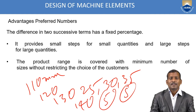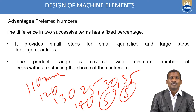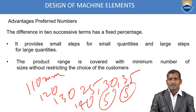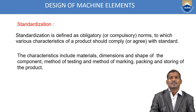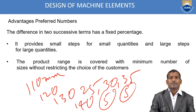Not only for diameter but for any parameter — distances and kilowatts — the product range is covered with a minimum number of sizes without restricting the choice of customers. These are the advantages of preferred numbers.